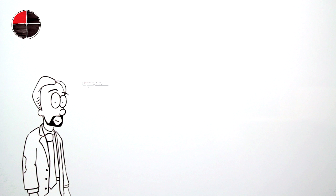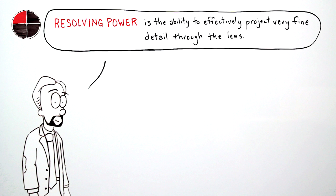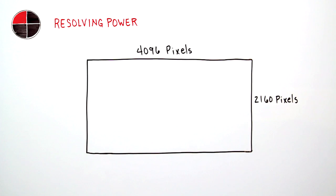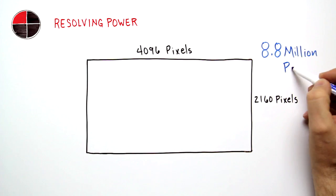Let's start with lens resolving power, the ability to effectively project very fine detail through the lens. High resolving power is needed to take full advantage of a 4K camera with its nearly 9 million pixels.